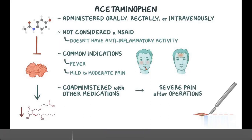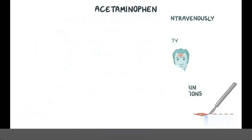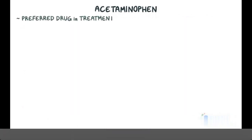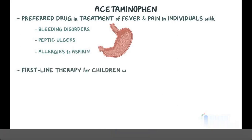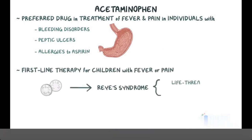Because acetaminophen doesn't affect COX in platelets and in the stomach, it is the preferred drug in the treatment of fever and pain in individuals with bleeding disorders, peptic ulcers, and individuals allergic to aspirin. Also, it's the first-line therapy for children with fever or pain, because aspirin can cause Reye's syndrome, which is a life-threatening condition that can occur after a viral infection, characterized by progressive encephalopathy and liver degeneration, and is linked with aspirin use.